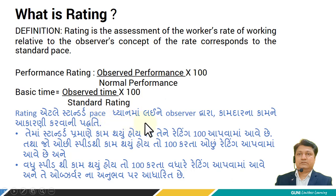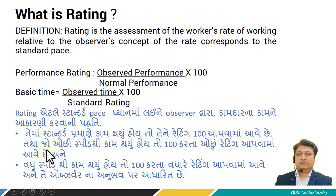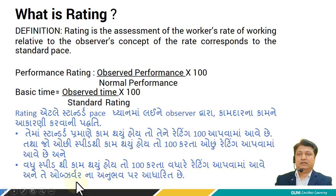Rating at the standard pace means the observer has to assess the worker's rate of working. If the work is done at the standard rate, then the rating given is 100. If the work is done at a lower speed, then a rating lower than 100 is given. And if the work is done at a higher speed, then a rating higher than 100 can be given. The rating is based on the observer's experience.